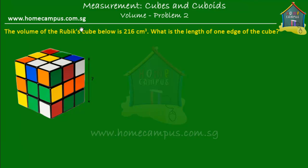Hello and welcome to homecampus.com.sg. Here is a very simple problem on volume of cubes and cube roots. It says that the volume of the Rubik's cube below is 216 cm³. What is the length of one edge of the cube?